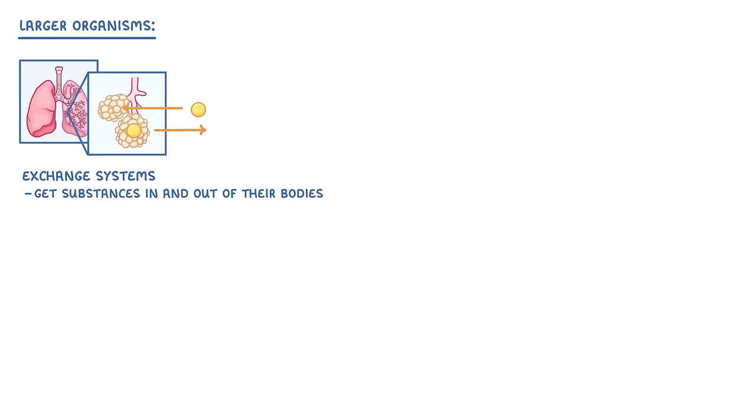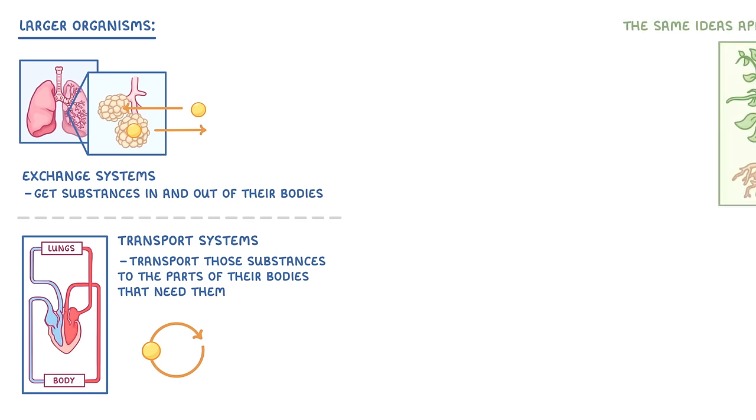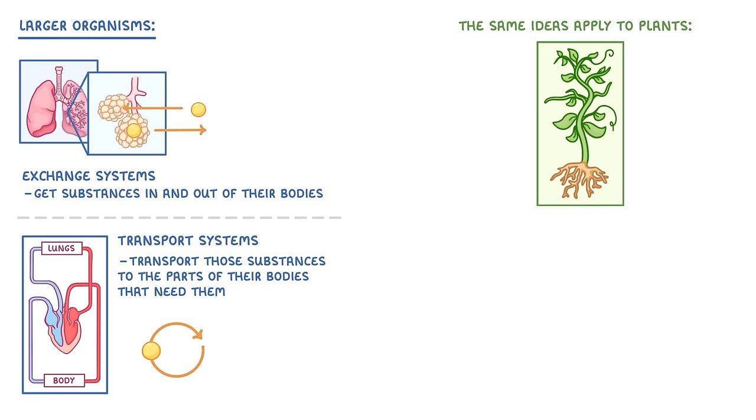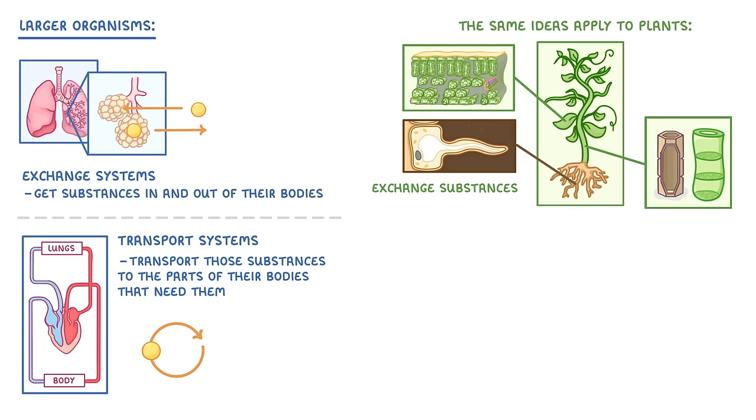So the takeaway here is that larger organisms generally have exchange surfaces to get substances in and out of their bodies, and also transport systems to transport those substances to the parts of their bodies that need them. The same ideas apply to plants, for example they have roots and leaves to exchange substances with the environment, and phloem and xylem tissues to transport those substances around the plant.